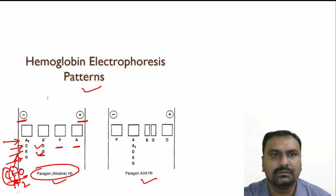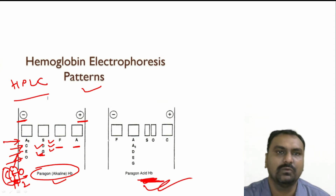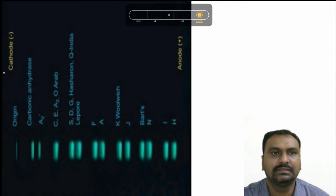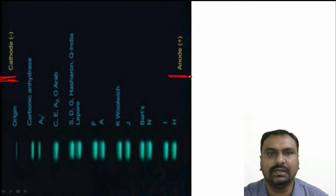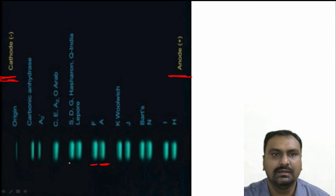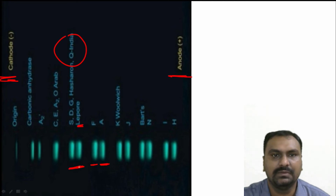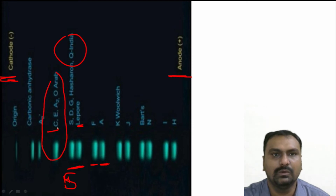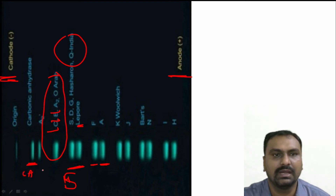Whenever you want to differentiate between HbS, HbD, or HbG, you can use HPLC or do acid hemoglobin electrophoresis. You can see here this is the cathode side and this is the anode side. The highest mobility is HbA, then fetal, then HbS, HbD, HbG, HbQ India, and also HbLepore — they will be seen around the S region. At the A2 region there can be CEO and A2. The lowest mobility is carbonic anhydrase. There will be carbonic anhydrase, A2, S, F, A.